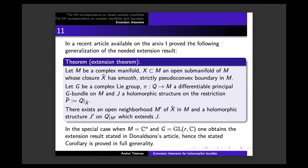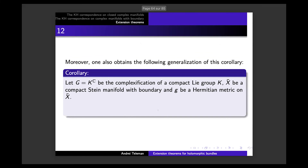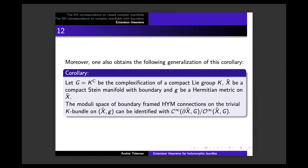Not only this — because the extension theorem holds so generally, I was able to generalize and get a similar description of the corresponding quotient in a much more general framework. I take G to be the complexification of a compact group, and X-bar to be an arbitrary compact Stein manifold with boundary with a Hermitian metric G. Then the whole phenomenon happens: the corresponding infinite-dimensional quotient — smooth maps with values in G on the boundary, quotiented by those which extend formally holomorphically on X-bar — can be identified with the moduli space of boundary-framed Hermitian-Einstein connections on the trivial bundle.